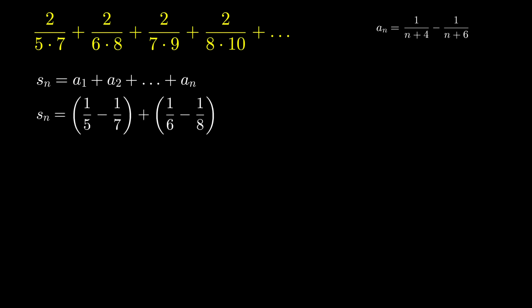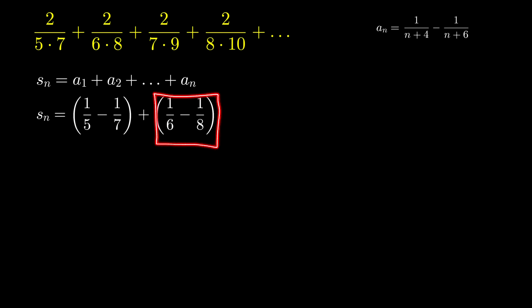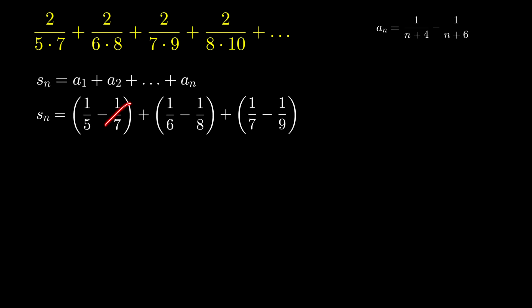S sub n can be written as: a sub 1 is 1 over 5 minus 1 over 7, plus a sub 2 which is 1 over 6 minus 1 over 8. We need to write more terms to figure out the formula for S sub n. Writing the third term: 1 over 7 minus 1 over 9. We already see that minus 1 over 7 and plus 1 over 7 cancel out. A trick for telescoping series is to write terms until consecutive terms in the sum cancel out.